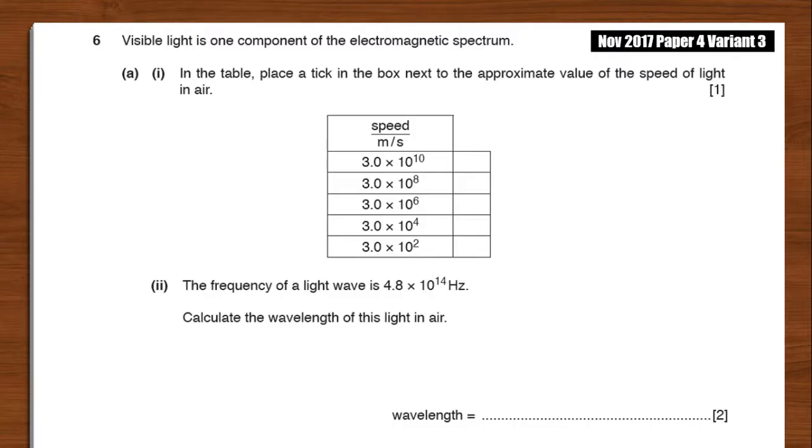If light is one component of the electromagnetic spectrum, in the table, place a tick in the box next to the approximate value of the speed of light in air.